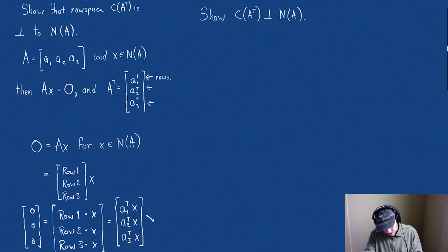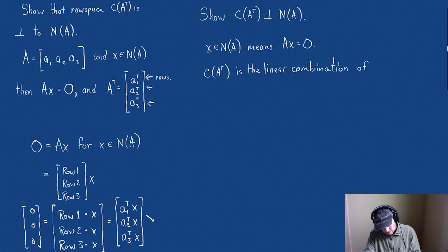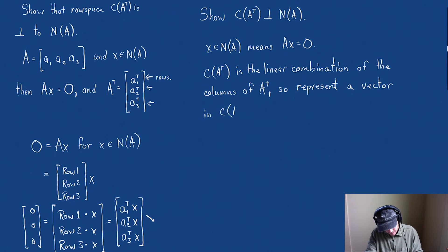So let's remember. What does this mean? So x in the null space of A means Ax equals 0. And the column space of A transpose is the linear combinations of the columns of A transpose. So we're just gonna take some y. So then, represent a vector in column space of A transpose as A transpose y.